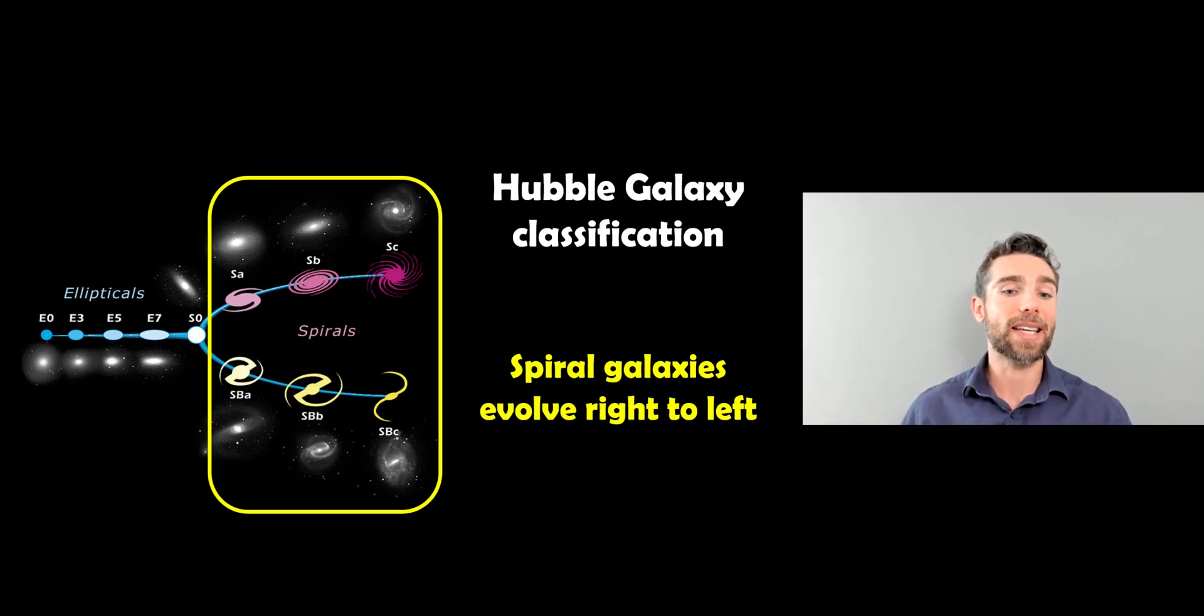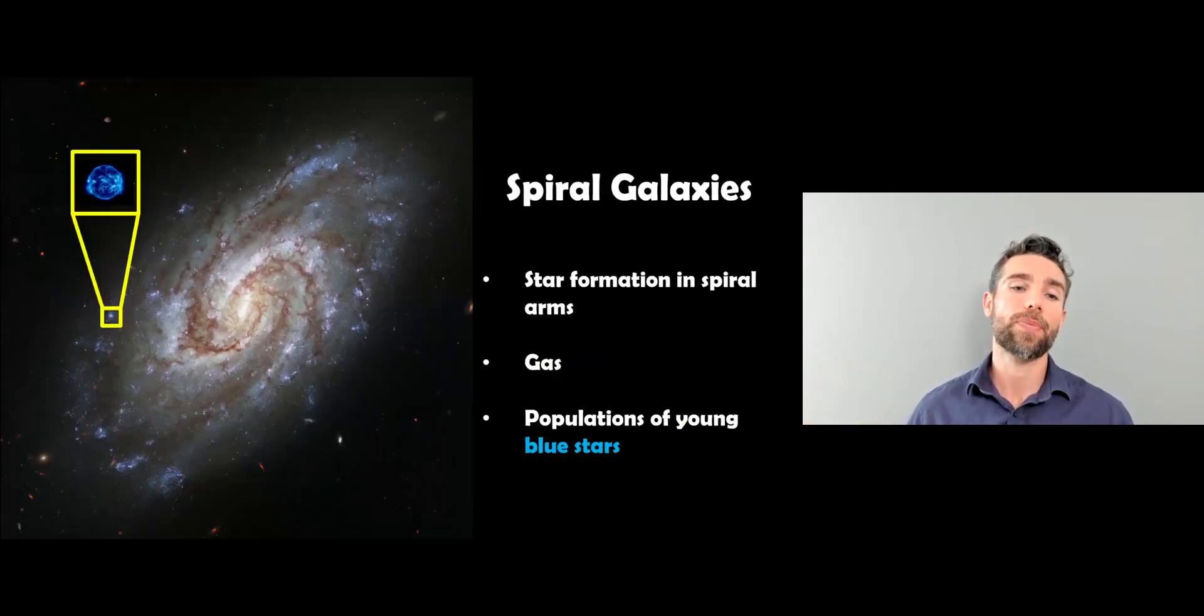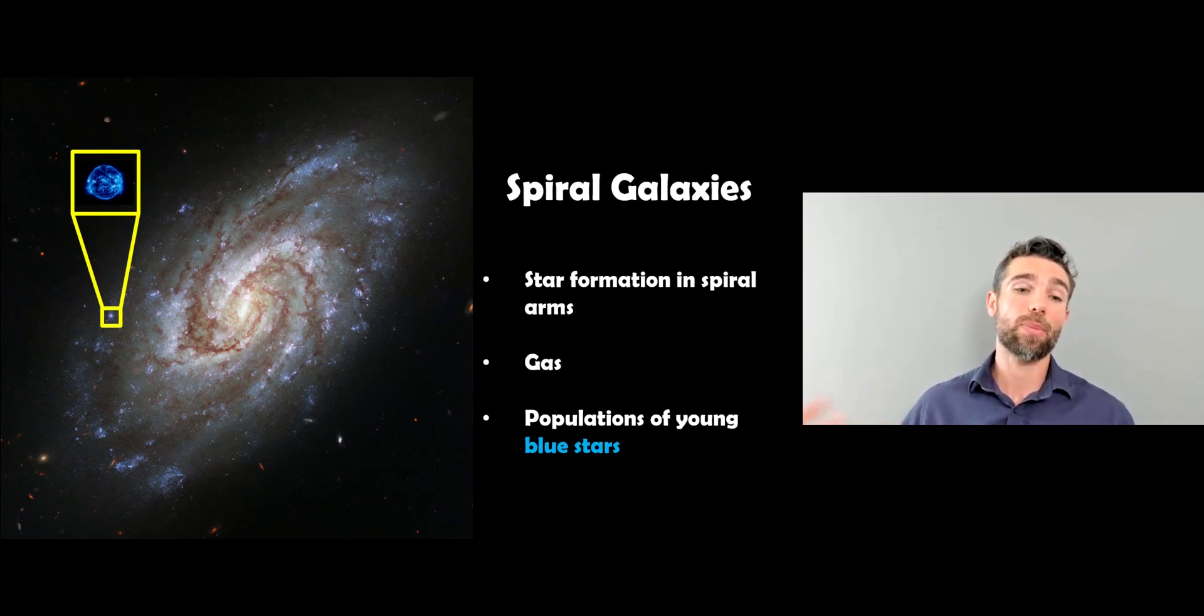The spiral galaxies in these groups will evolve from the right hand side to the left hand side, so the spiral arms get more tightly wound, they lose gas, things like that. These spiral galaxies are the ones we're interested in when we're looking at grand design galaxies. Spiral galaxies, referring to potentially the grand design ones, the star formation will occur in the spiral arms.